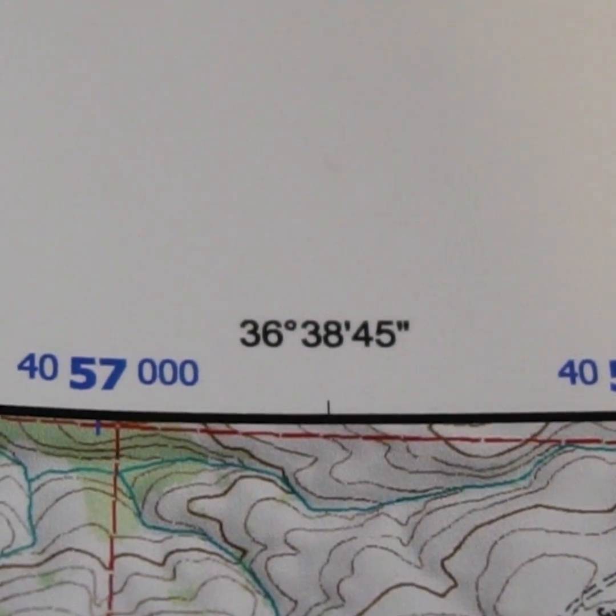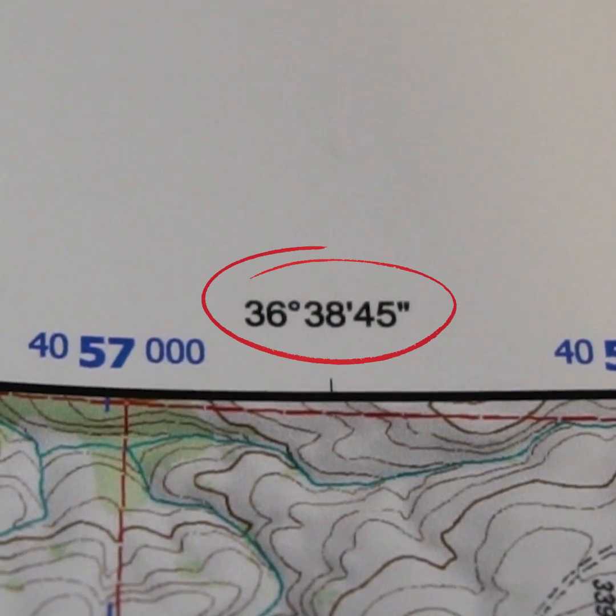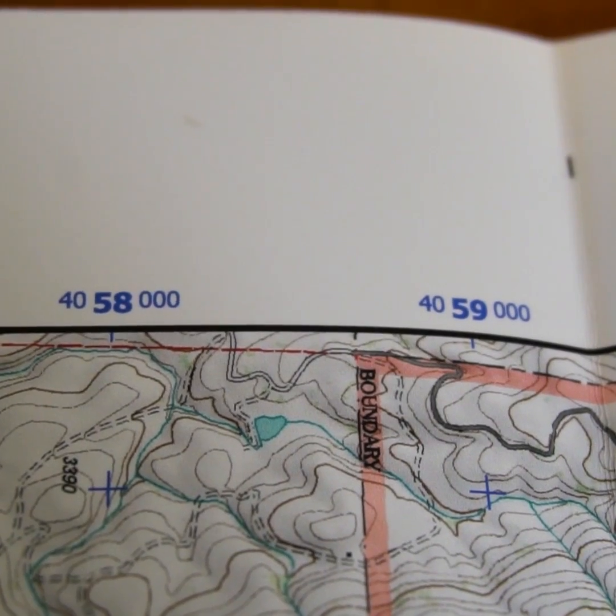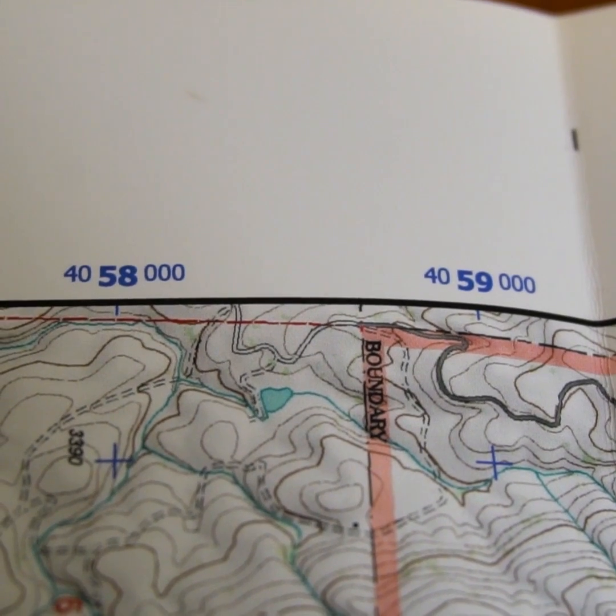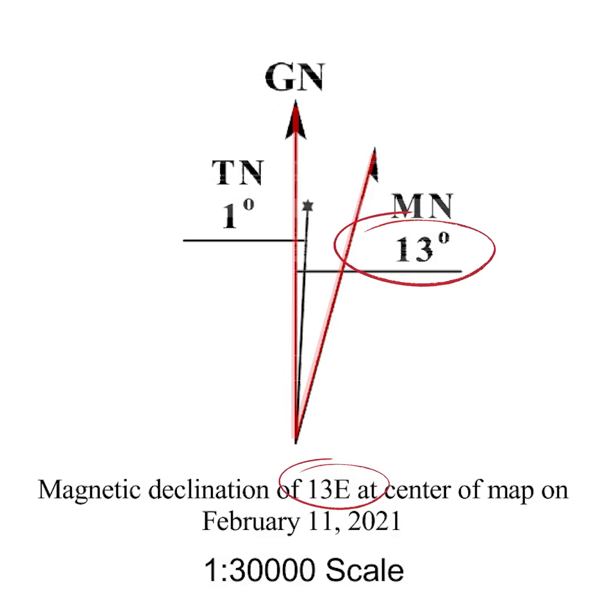The only time you would want to use the magnetic north, true north difference is if you are aligning your compass to the black longitude grid lines. If you are using the blue UTM grid lines or tick marks or the edge of the map, use the difference between magnetic north and grid north.